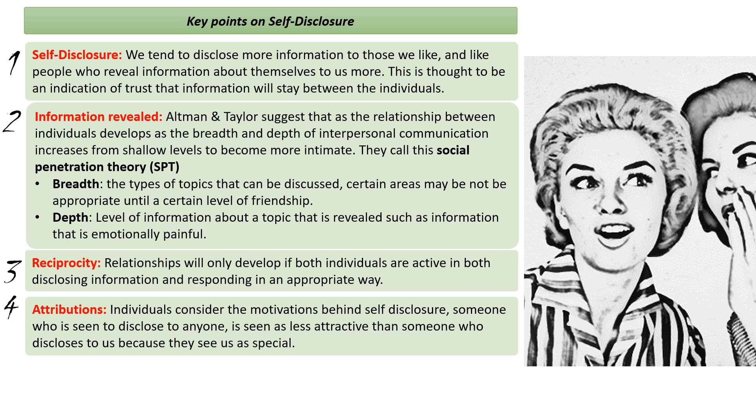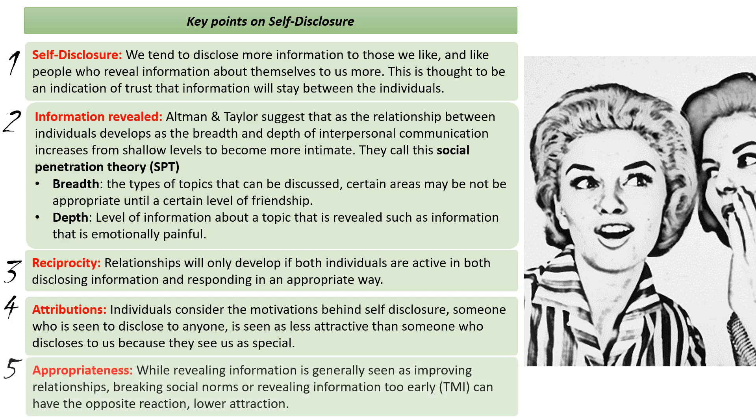We also consider the appropriateness of the self-disclosure. We know the term TMI — too much information — which indicates that someone has shared information with you that you really don't want to know. While revealing information is generally seen as improving relationships, if you break a social norm by discussing something completely inappropriate or by revealing very private information far too early in a relationship, this can have the opposite effect and actually reduce attraction at the early stages of a relationship.